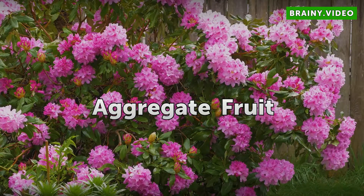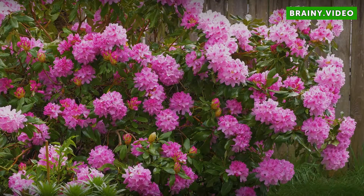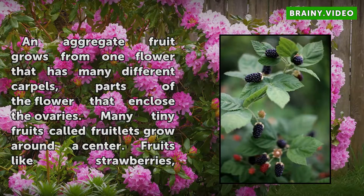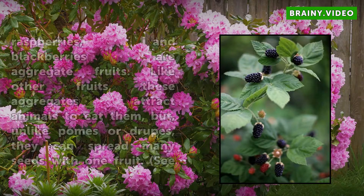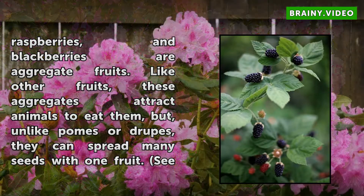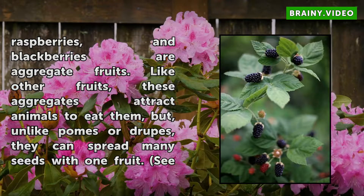An aggregate fruit grows from one flower that has many different carpels, parts of the flower that enclose the ovaries. Many tiny fruits called fruitlets grow around the center. Fruits like strawberries, raspberries, and blackberries are aggregate fruits. Like other fruits, these aggregates attract animals to eat them, but unlike pomes or drupes, they can spread many seeds with one fruit.